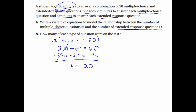That's why elimination is a little bit more powerful in some cases — it gets there faster. Divide by 4 on both sides: r equals 20 divided by 4 is 5. That's exactly what we found using substitution. Plug it back in: m plus 5 equals 20, subtract 5, and m equals 15.